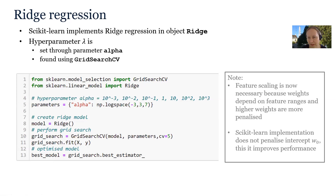Two important things to remember: first, feature scaling is now necessary because the weights depend on feature ranges, and higher weights are more penalized, so if you don't scale your features you will get a different model. Second, scikit-learn does not penalize the intercept w0, because it reduces the bias error introduced by regularization and in turn improves the performance of ridge regression.